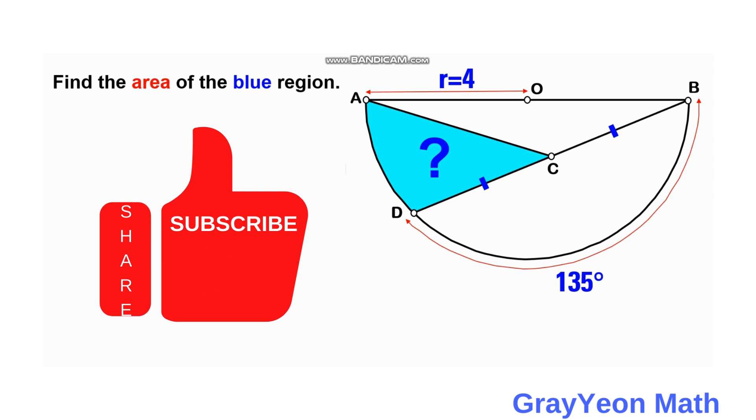And the area formed by the arc AD and the segment AC and this half of DB or DC form a region, a blue region. And the radius of this semicircle is 4 and we are required to find the area of this blue region.